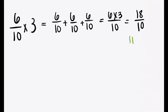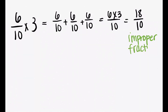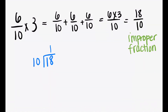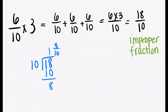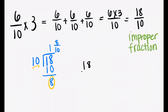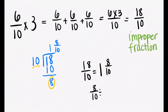Now 18 over 10 is an improper fraction. We need to divide 18 by 10 to turn it into a mixed number. 10 fits inside of 18 once because 10 times 1 is 10. You subtract and get 8, so you have 8 tenths. So our improper fraction of 18 tenths is actually 1 and 8 tenths. However, 8 tenths can be simplified by dividing the top and the bottom by 2, which gives us 4 fifths. So our answer is actually 1 whole and 4 fifths.